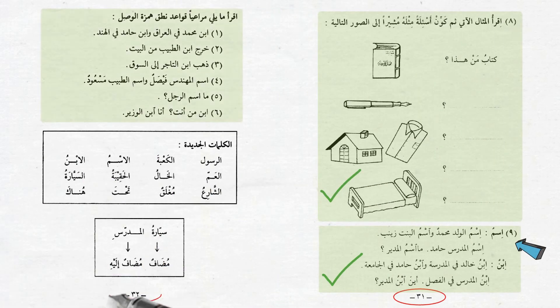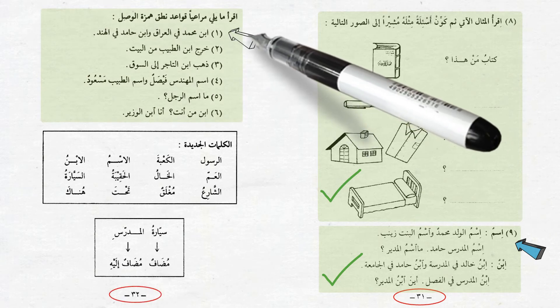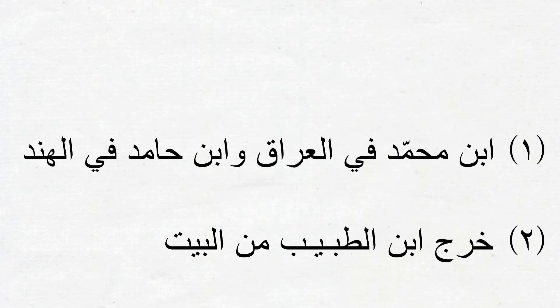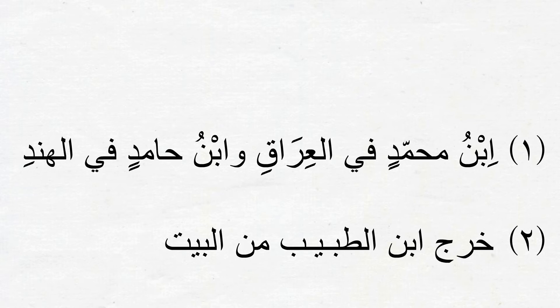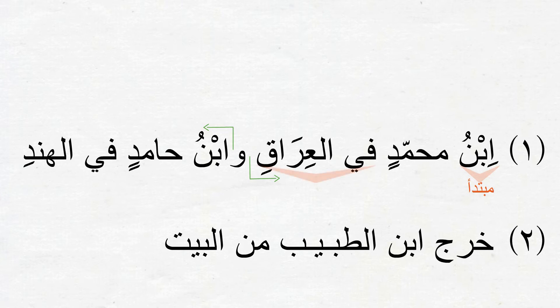On the next page we have six example sentences involving these two words. Let's read them correctly using the phonetic rule we learned, and also analyze them. The first: إِبْنُ مُحَمَّدٍ فِي الْعِرَاقِ وَابْنُ حَامِدٍ فِي الْهِنْدِ — The son of Muhammad is in Iraq and the son of Hamid is in India. The مُبْتَدَأ of the first sentence is إِبْنُ, which is مُضَاف; مُحَمَّدٍ is the مُضَاف إِلَيْهِ; فِي الْعِرَاقِ is جَار وَمَجْرُور functioning as شِبْهُ جُمْلَة type خَبَر. Similarly in the second sentence.